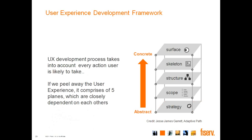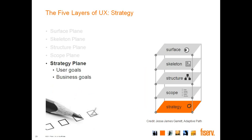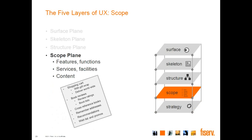As we move up to the scope plane, we decide what are the features and functions we need to cover, what are the services and facilities that need to be provided. For example, in that portal for selling and buying books, whether we should provide a shopping cart, whether book reviews should be there, whether cross-references of the book should be provided, and so on.